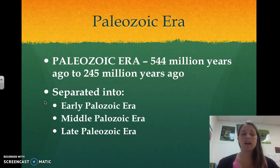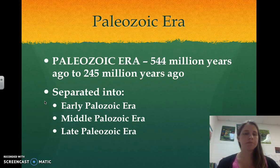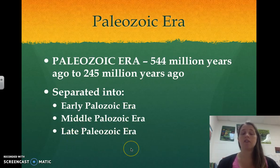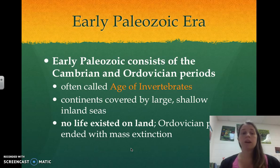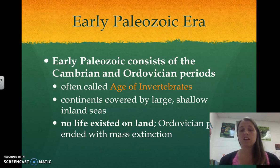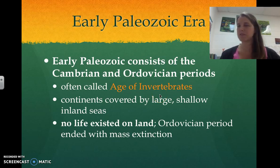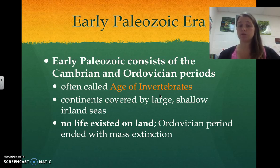The Paleozoic Era is from 544 million years ago to about 245 million years ago, and it's separated into three mini eras: the early, middle, and late Paleozoic. The early Paleozoic consists of the Cambrian and Ordovician periods. These are called the age of the invertebrates — remember, invertebrates are things that don't have spines or bones. During the early Paleozoic, the continents were covered by large shallow inland seas.